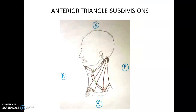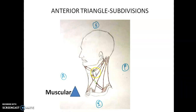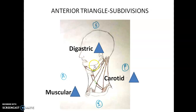The anterior triangle is a large triangle subdivided by the superior belly of omohyoid and the anterior and posterior belly of the digastric muscle into three and a half triangles. The triangle below the hyoid bone is filled with infrahyoid muscles and is called the muscular triangle. The triangle filled with the common carotid, external carotid, internal carotid, and branches of the external carotid is called the carotid triangle. The triangle bounded by the digastric muscle is called the digastric triangle. The triangle beneath the chin — today's topic — is called the submental triangle.